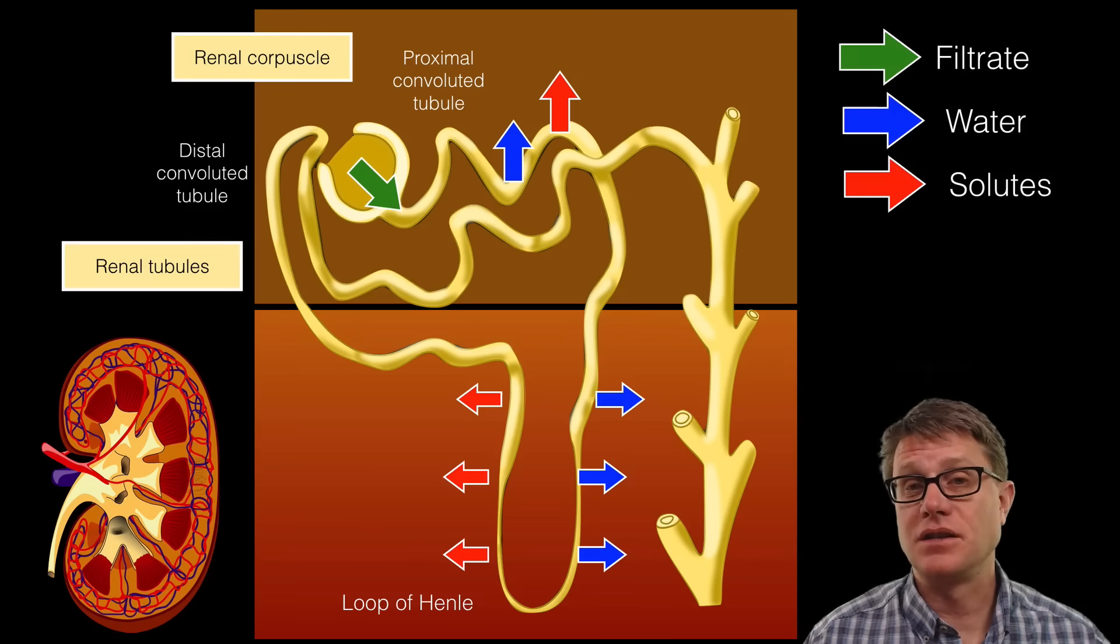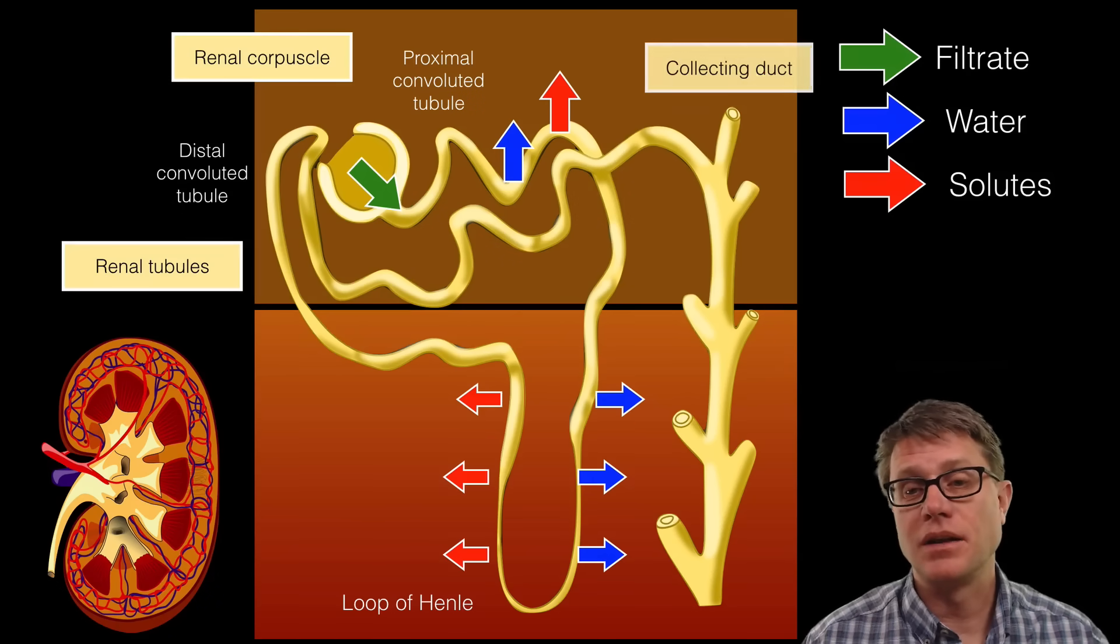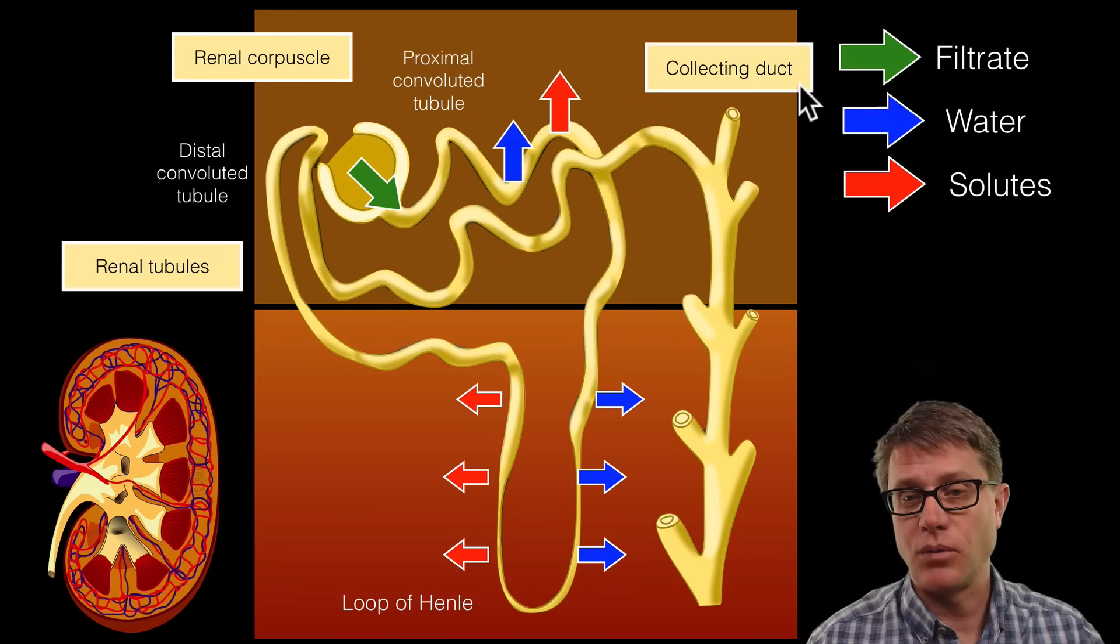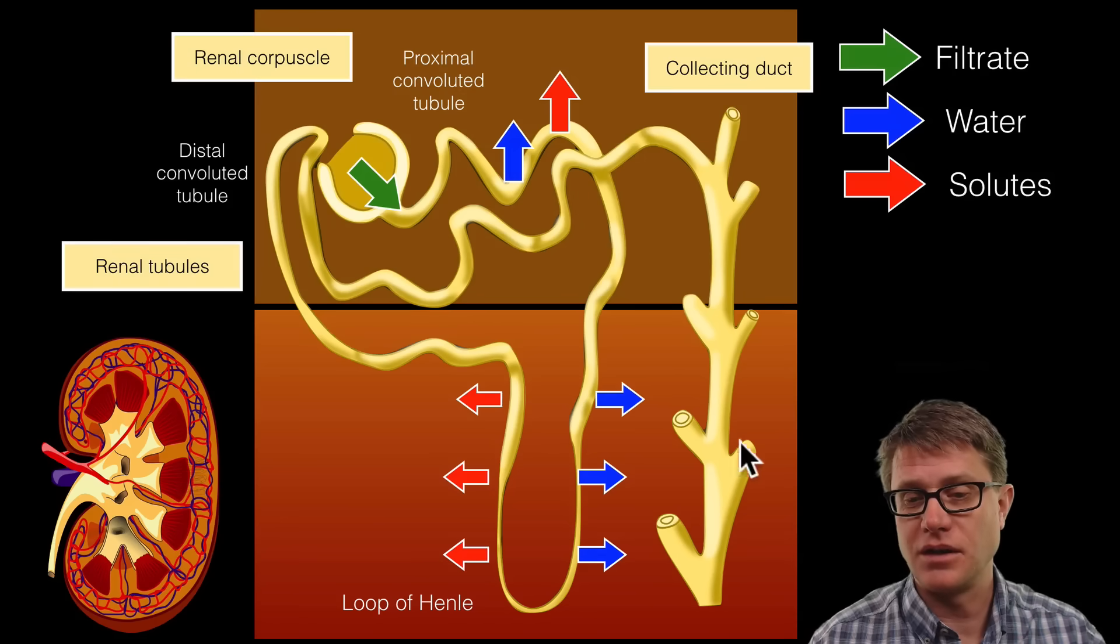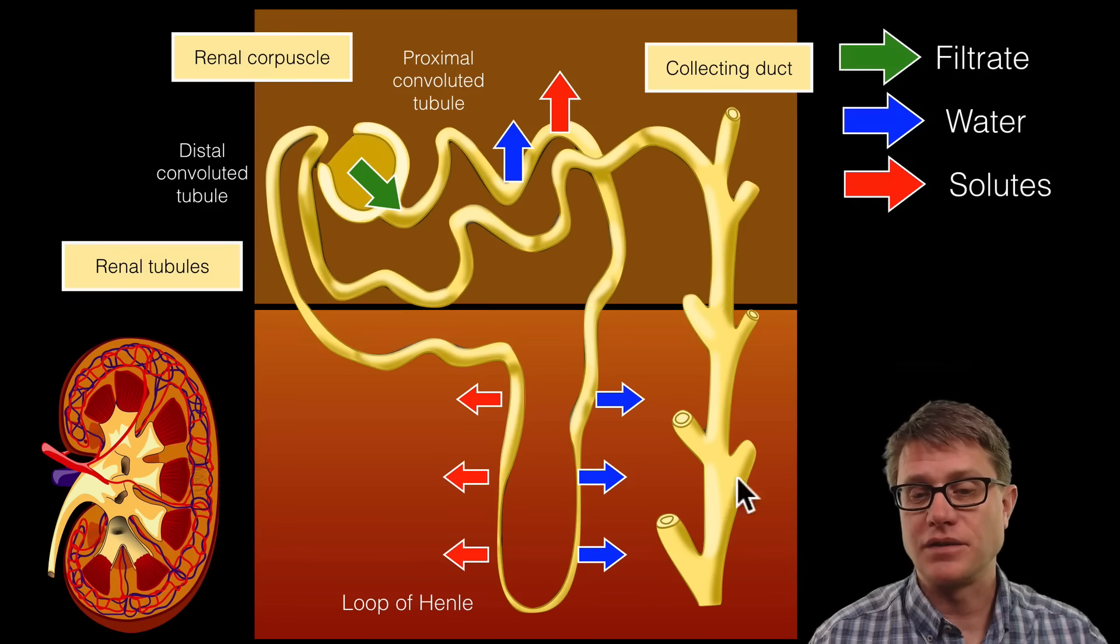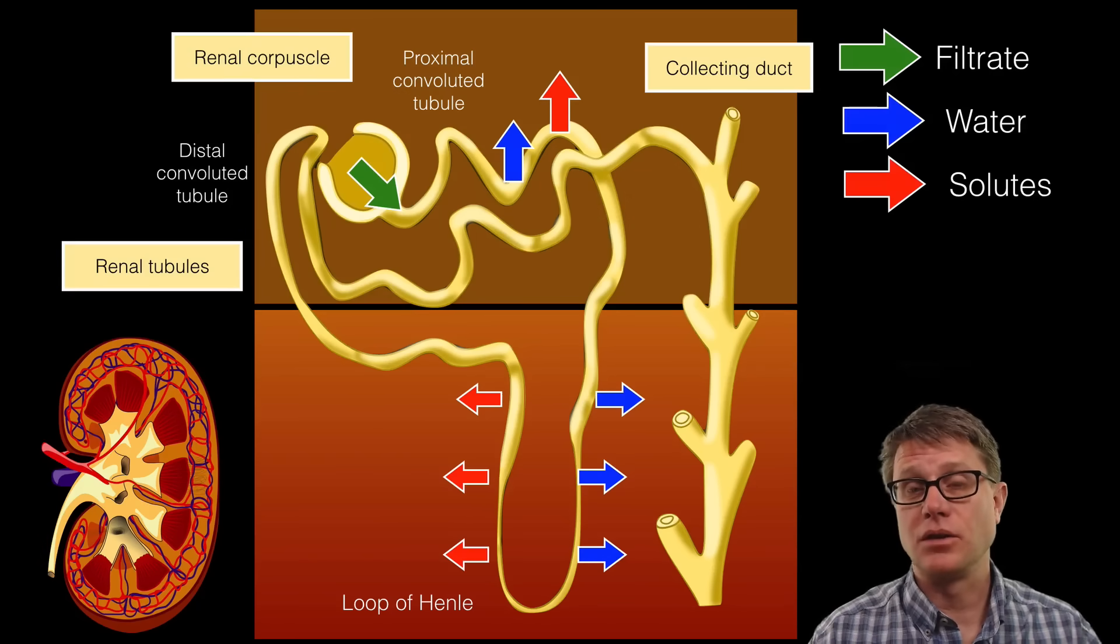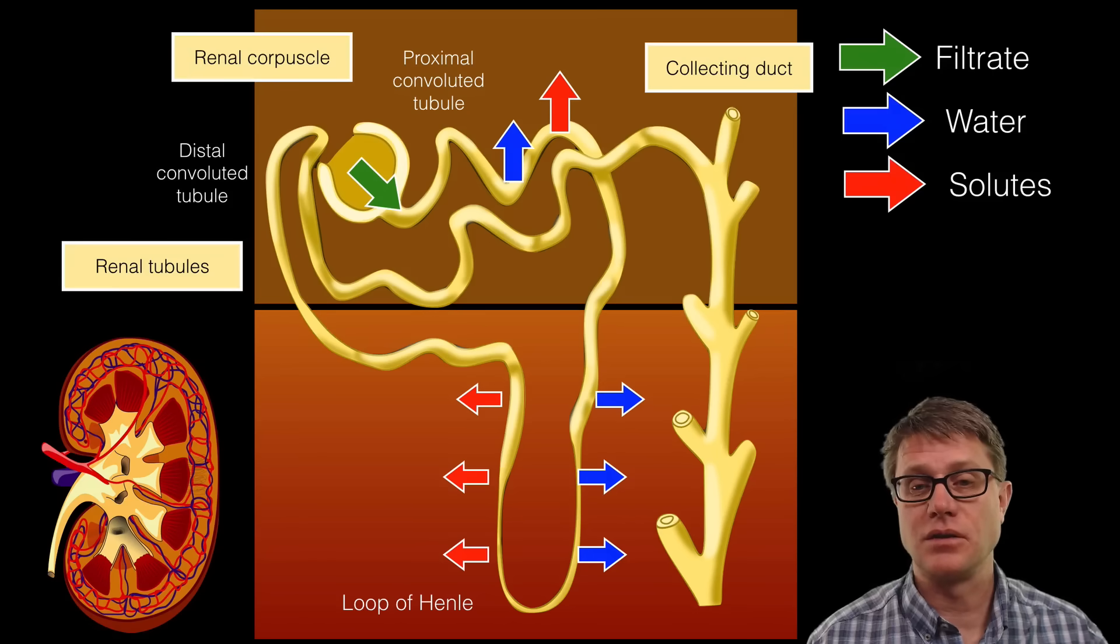From there we're moving into the distal convoluted tubule and then into the collecting duct. If you think about where this collecting duct is going, you can see that we're getting a bunch of other nephrons connected to it as well. From here it's eventually going into the center of the kidney, the renal pelvis, and eventually it's going to leave as urine.